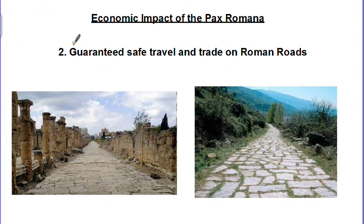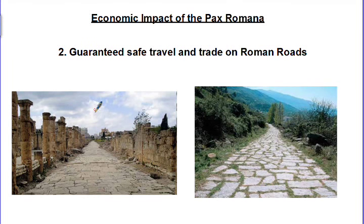Impact number two: they guaranteed safe travel on the Roman roads. They built these roads throughout the Roman Empire — some were paved, some were more dirt-style roads — but either way, you could travel on them with horses, carts, or on foot, and you could be safe and secure, and trade goods. These are some examples of what Roman roads look like today.